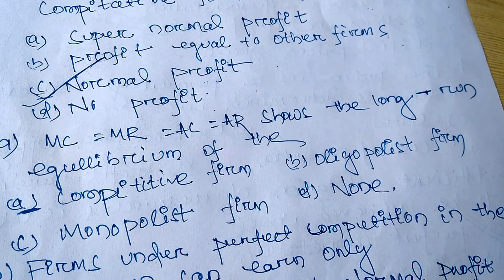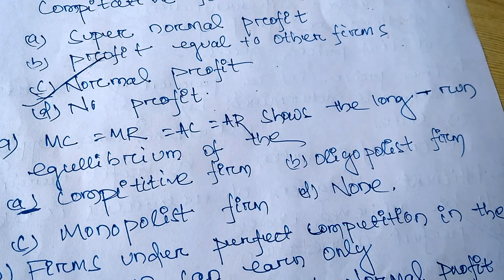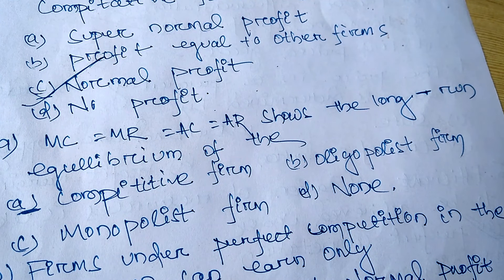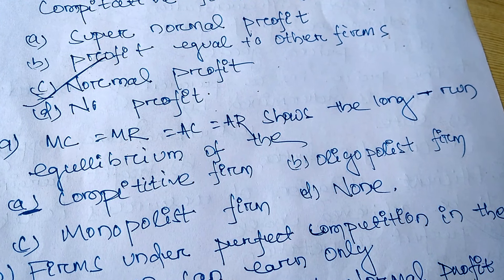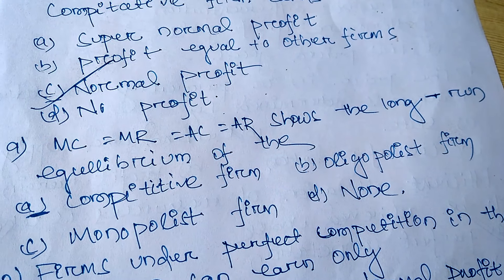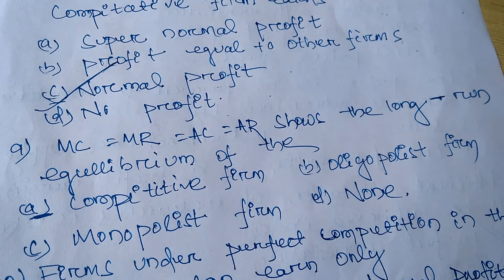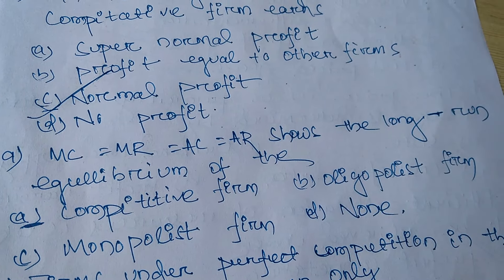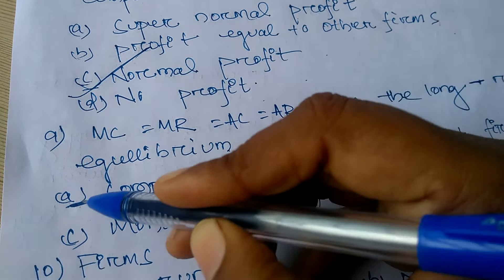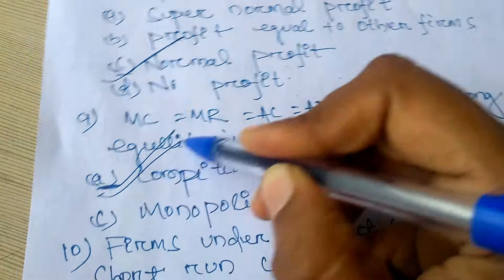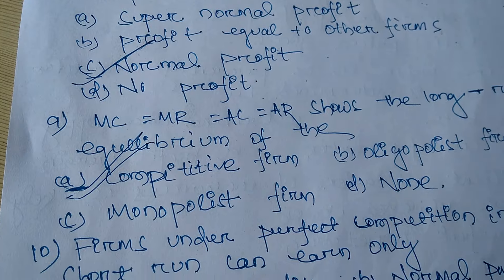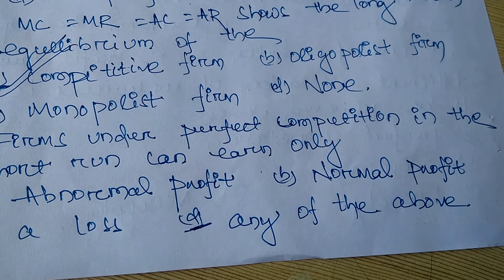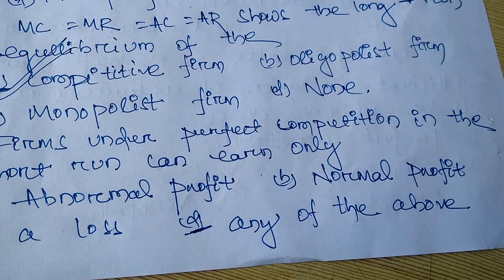When MC equals MR equals S equals AR, this is the long run equilibrium of which firm — competitive firm, oligopolist firm, monopolist firm, or none? You have to know that MC equals MR and S equals AR — so it is a competitive firm only.